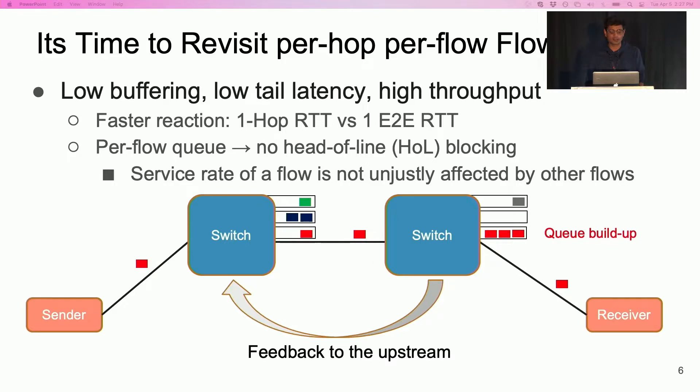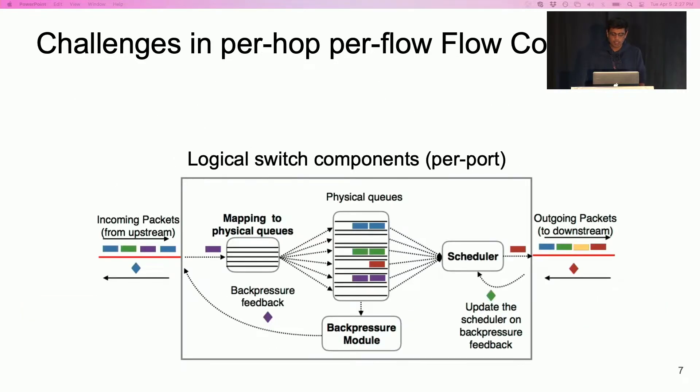To understand this better, let's look inside the inner workings of a switch. This figure shows the switch components for a generic per hop per flow scheme. The mechanism can be broken down into three logical modules.